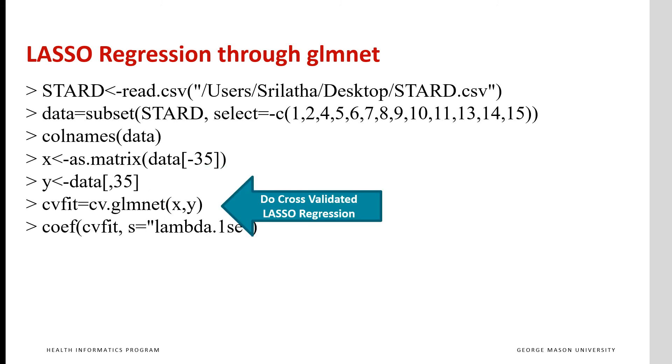Then do a cross validated fit to the data. This will produce the LASSO regression with different values of lambda. You want as an output the coefficients of lambda dot 1 se, that's one standard error above the minimum. That guarantees us a parsimonious model that is just as accurate as anything else.